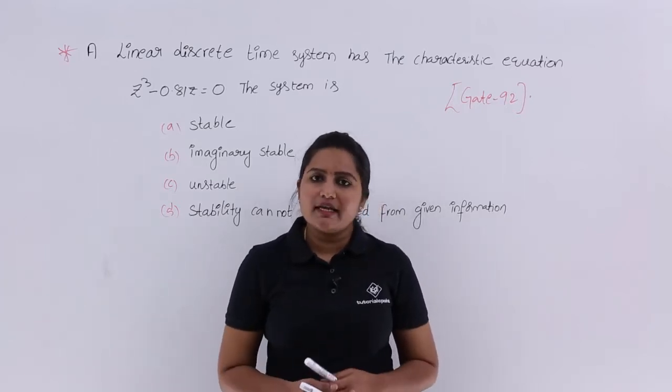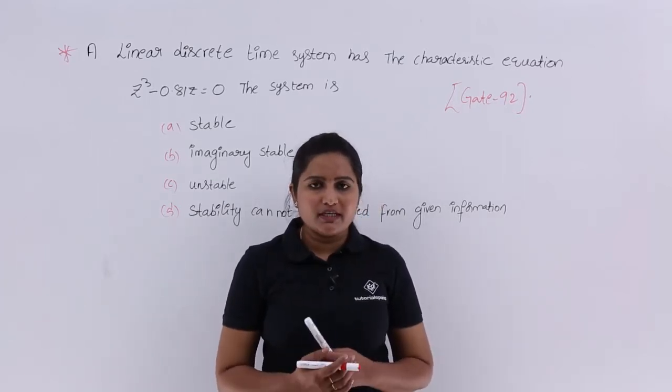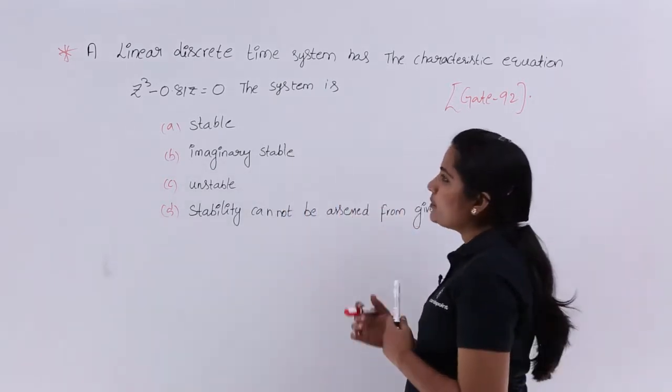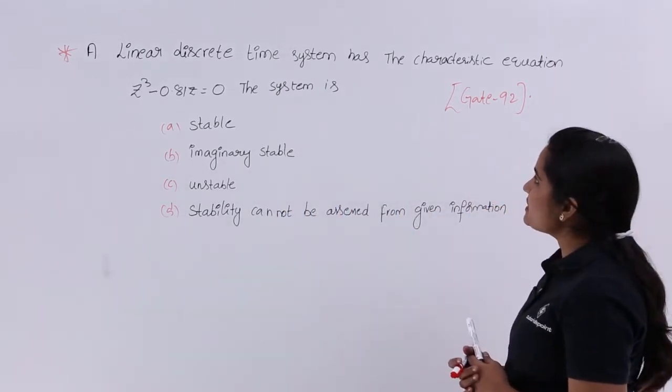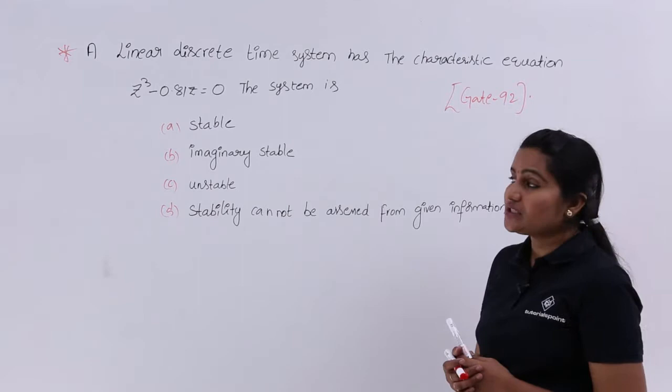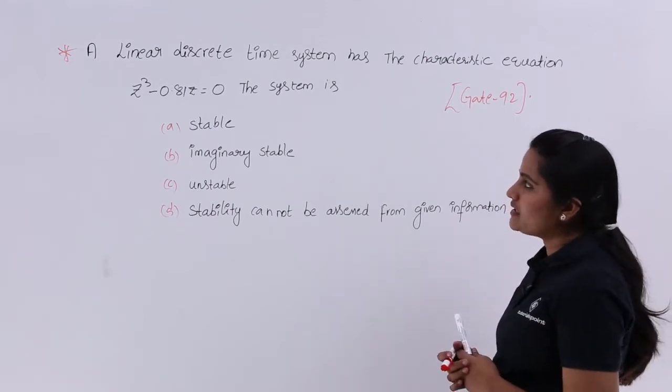In this video, we are going to solve a previous GATE problem related to Z transforms. Observe the problem here: a linear discrete time system has the characteristic equation Z³ - 0.81Z = 0.